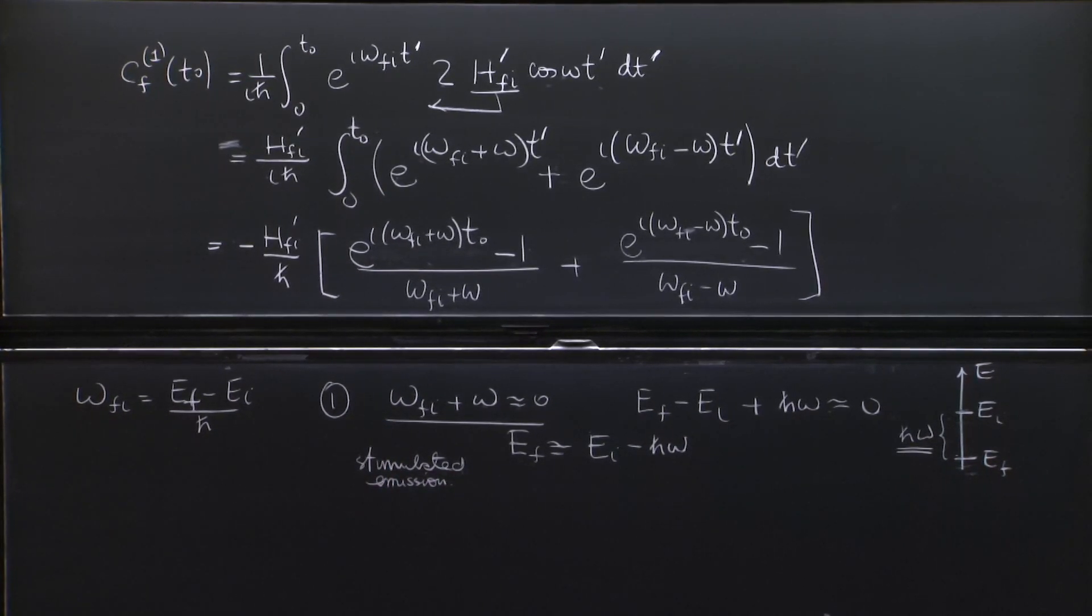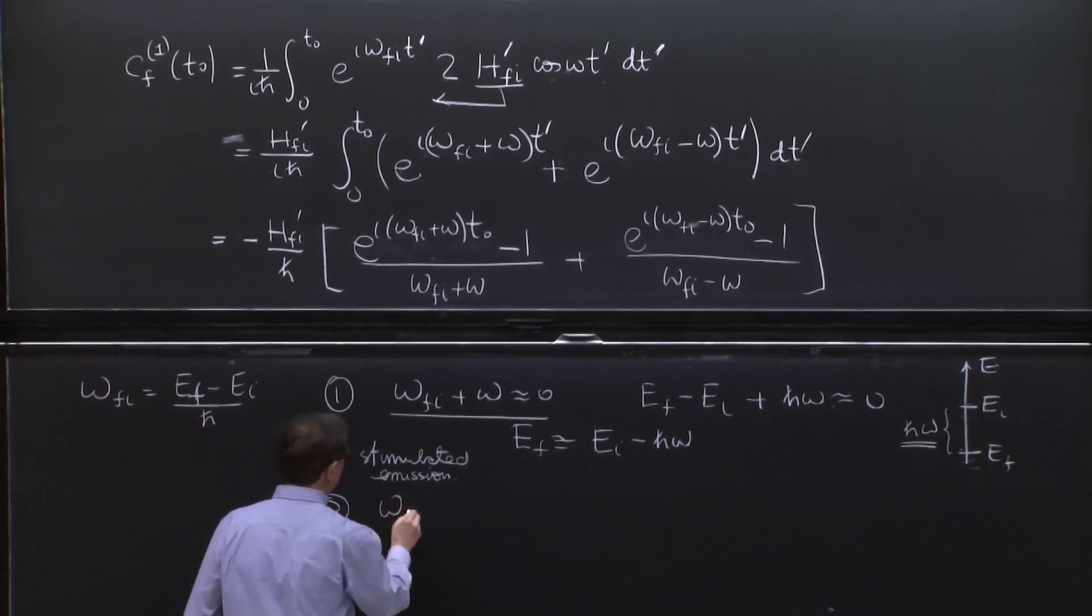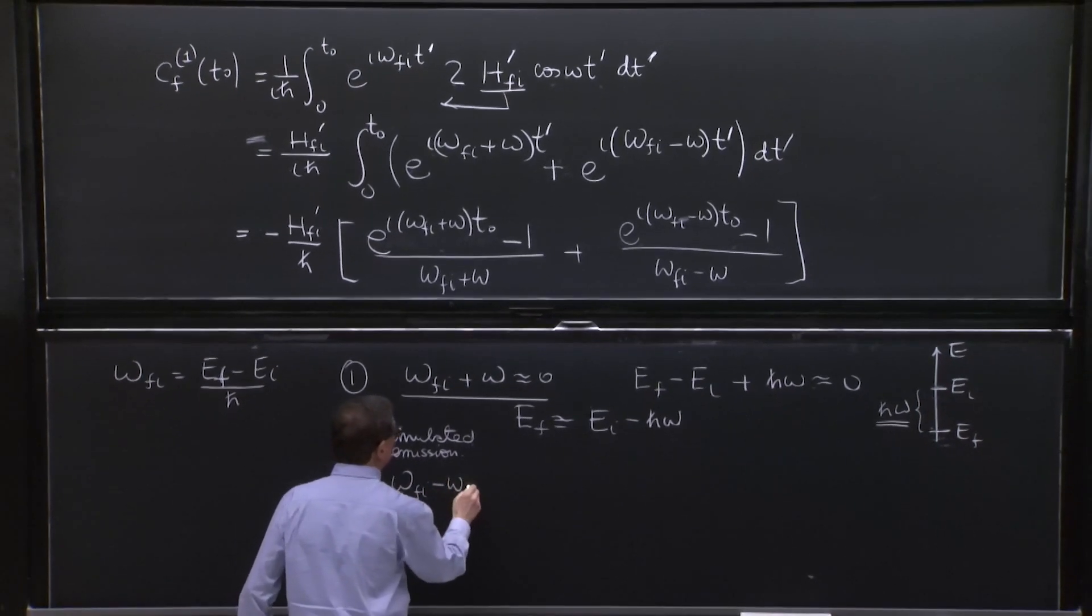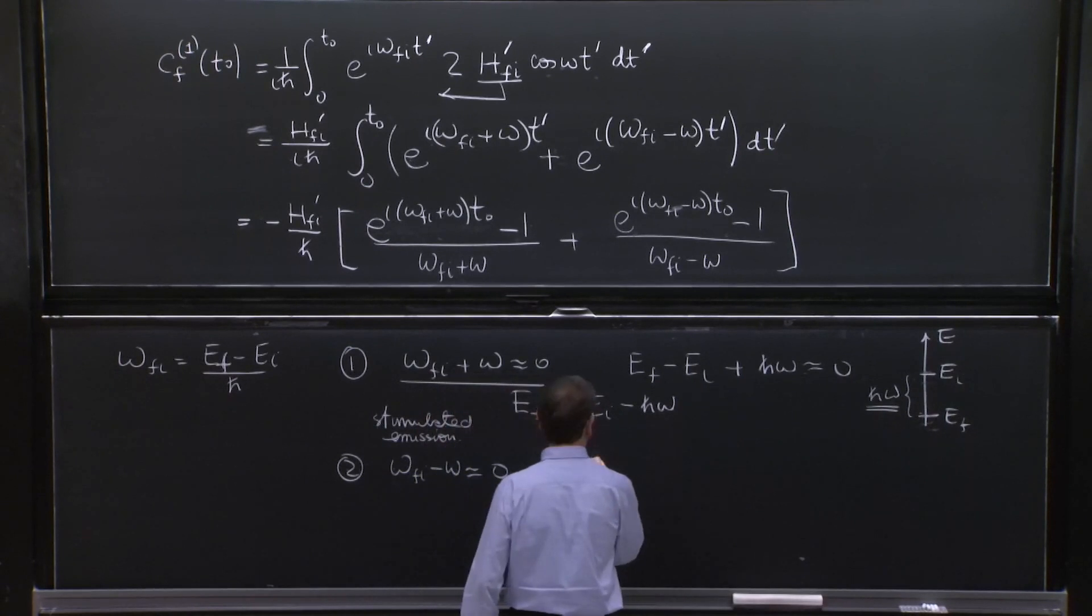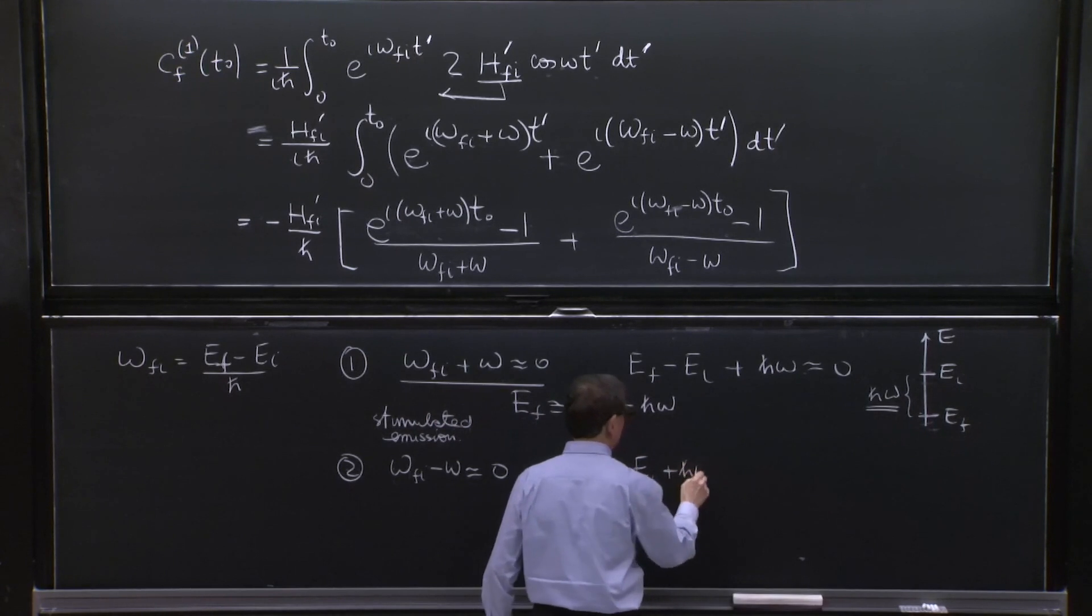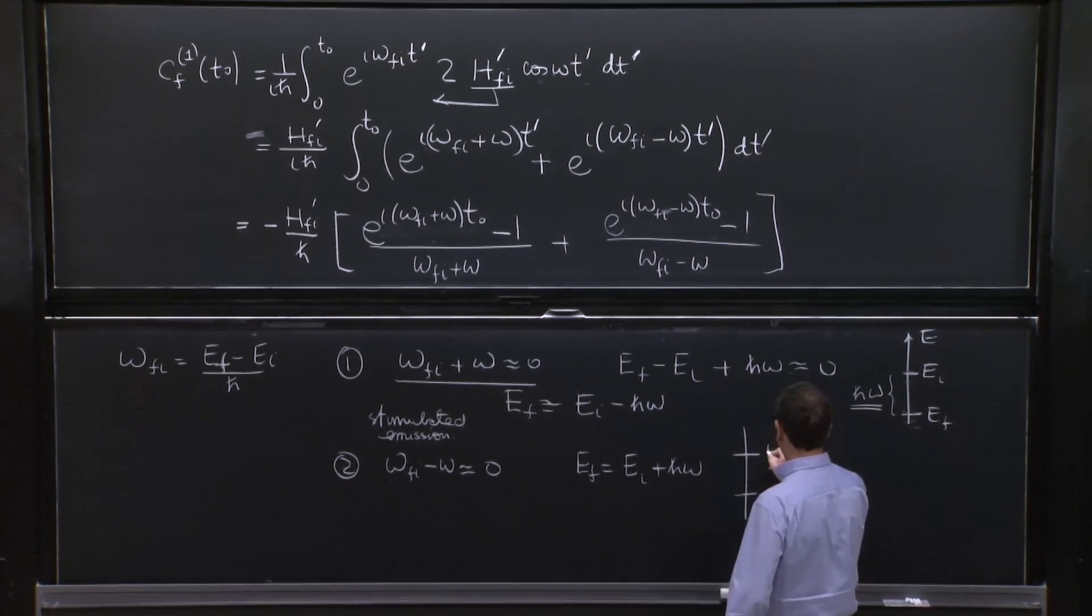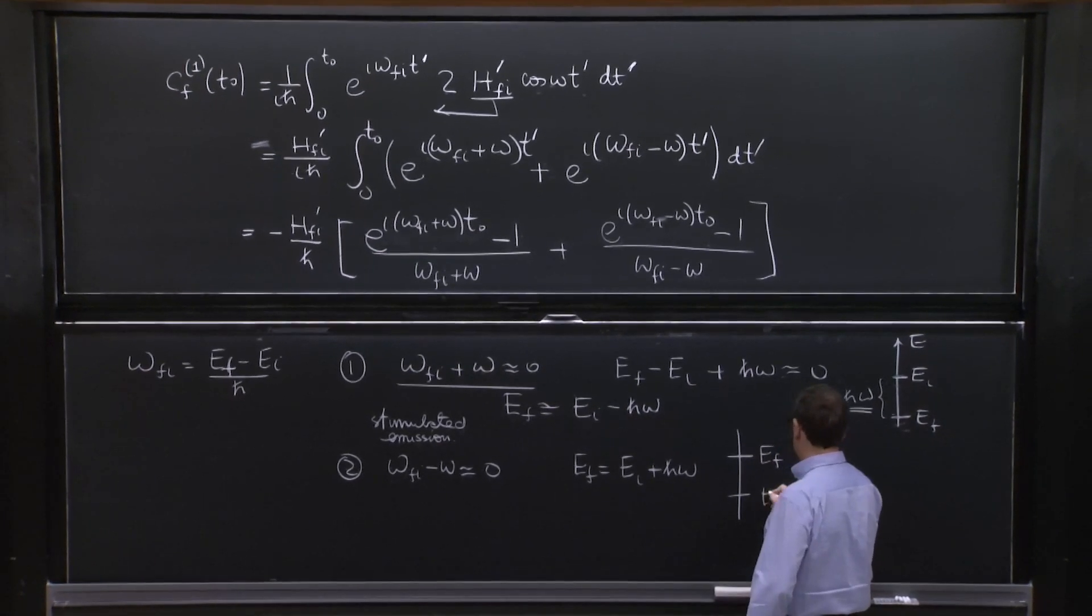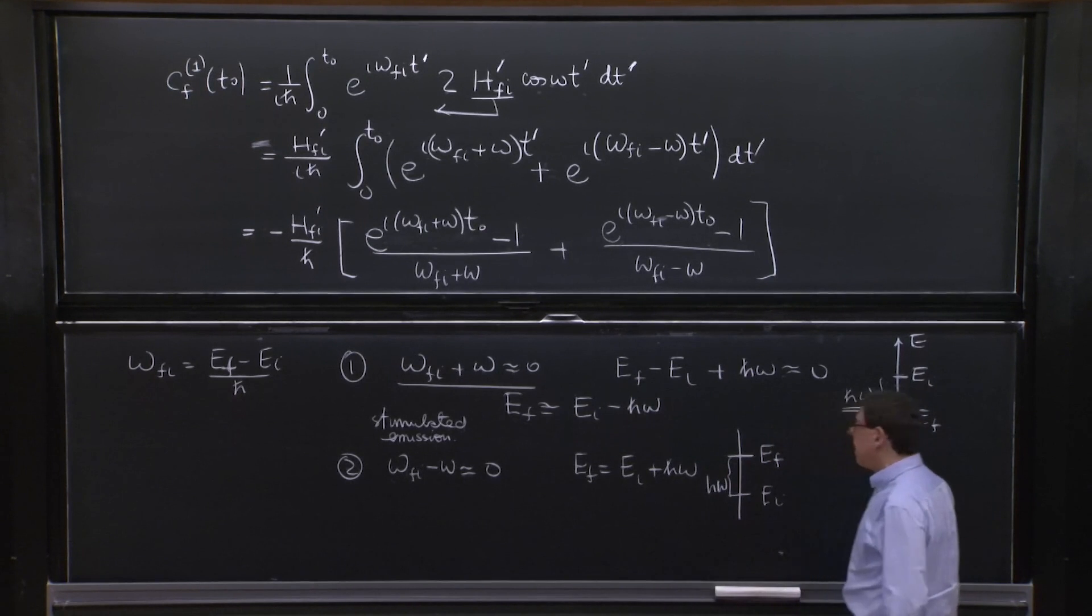And then, the other term corresponds to the case when omega fi minus omega is equal to 0. In which case, EF is equal EI plus h bar omega. This time, EF is higher than EI by h bar omega. And this process is called absorption.